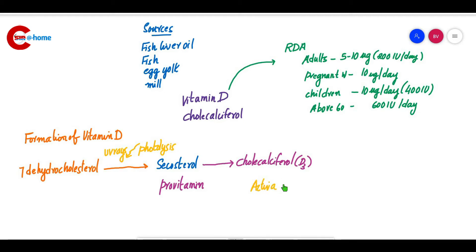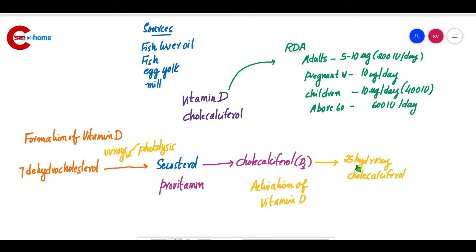Now we can study the activation of Vitamin D. Calciferol is transported into the liver, where it is converted into 25-hydroxy calciferol with the help of the enzyme 25-hydroxylase. This enzyme performs hydroxylation at the 25th position, so it is known as 25-hydroxy calciferol.